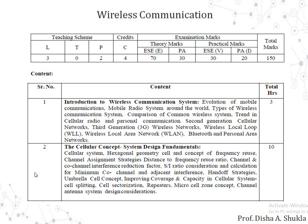The cellular concept chapter covers the designing of the cellular system — what is a cellular system, what is hexagonal cell geometry, the concept of frequency reuse, channel assignment strategies, frequency reuse ratio, channel and co-channel interference reduction factor, S/I ratio considerations and calculation for minimum co-channel and adjacent interference, hand-off strategies, umbrella cell concept, improving the coverage and capacity in the cellular system, cell splitting, cell sectorization, repeaters and microcells, and channel antenna system design considerations.